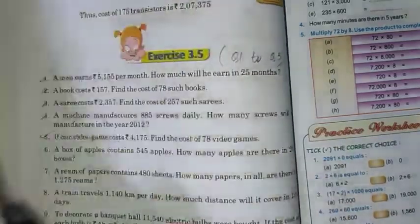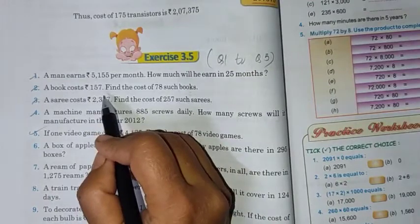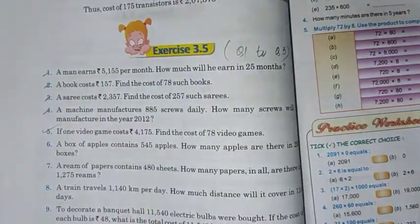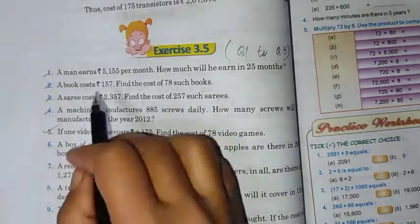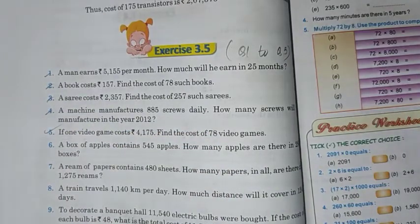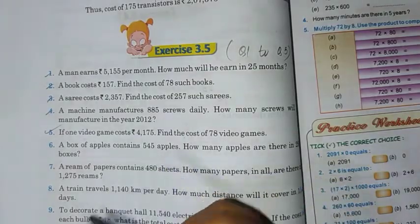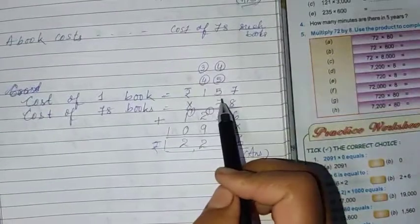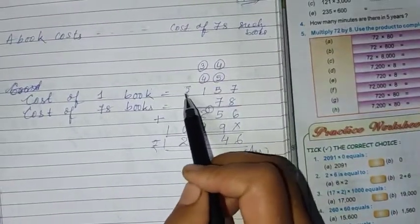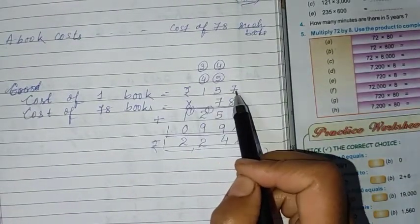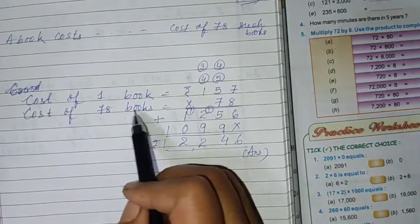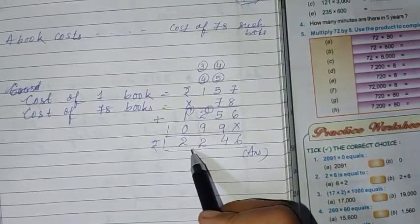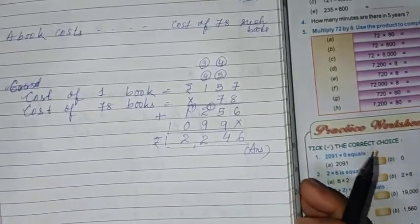Now second question. A book costs 157 rupees. Find the cost of 78 such books. Here I have told you the cost of 1 book is given, cost of 78 books are asked. So if value of 1 is given, more asked, then we have to do multiplication. So simple statement: cost of 1 book is equal to rupees sign, don't skip, 157. And cost of 78 books is equal to multiply by 78. Do neatly here. Here you will get 12,246 rupees.